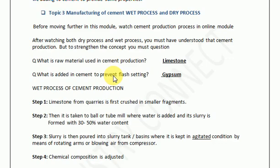Now let us begin with the wet process. The first step is simple: limestone or calcium carbonate quarries are available in certain states. Companies go there, establish their plant, and the first thing they do is get the raw material and crush it into small fragments so that it can be handled.